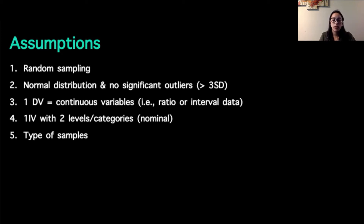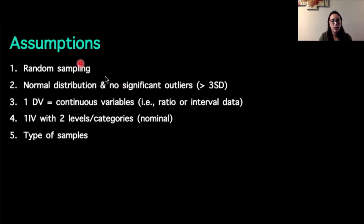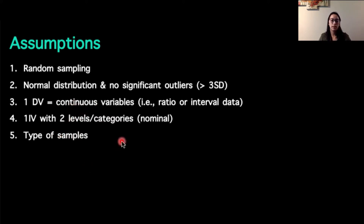The assumptions for our t-tests are going to be fairly similar between independent and dependent. So the first five assumptions listed here — in the flowcharts I kind of combine the variable and the sample stuff, so when you look at the numbering in our flowcharts, it might not match up exactly to this slide, but I like to list things out so you make sure you have a checklist on what you need.